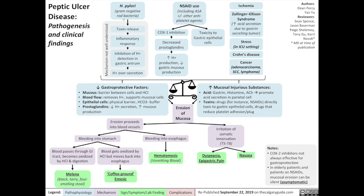For H. pylori, the mechanism of causing peptic ulcers is not very well understood. However, we believe it's because of the toxins released by the bacteria, leading to an inflammatory response which inhibits the detection of hydrogen ions by cells in the gastric antrum, leading to the over-secretion of hydrogen ions.